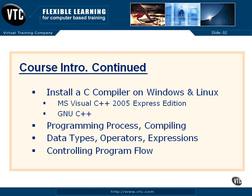We will be looking at the process of programming — what has to happen if you're going to become any kind of programmer — and how to work with the C compiler, how to compile your thoughts into a language, and then actually into an executable program. We will look at C data types, operators, and expressions, which are just our data types mixed with operators that give us results. We'll see how to control the flow of a program, how to make it branch in different directions based on things happening or not happening.